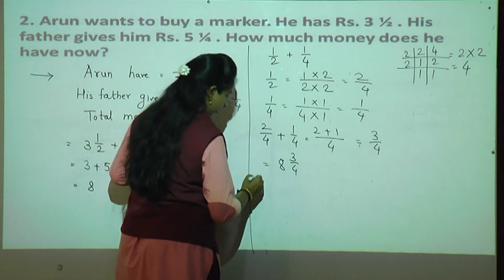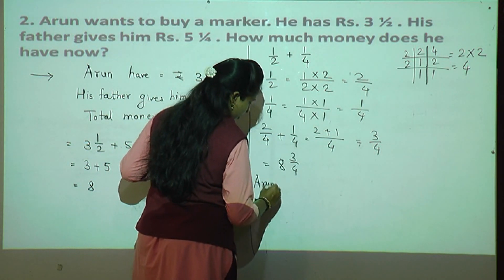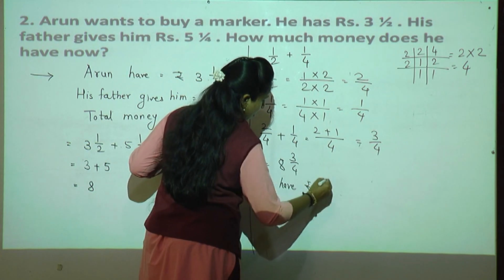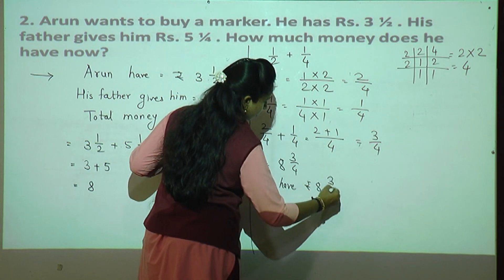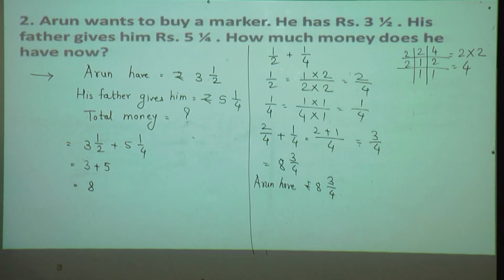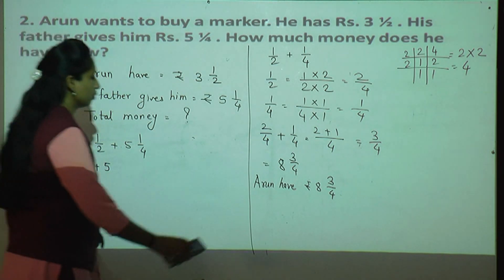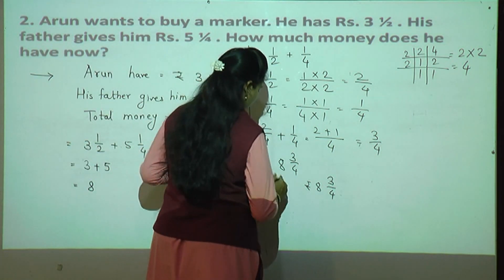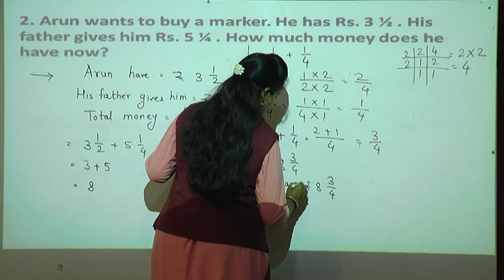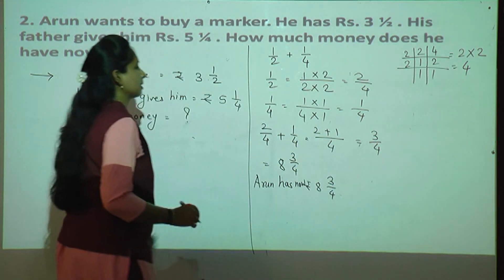So the total money Arun has now is rupees eight and three upon four. Arun has now rupees eight and three upon four. Clear? Yes, very good.